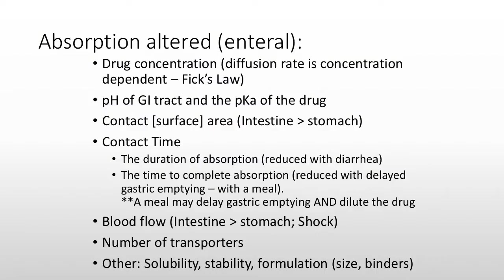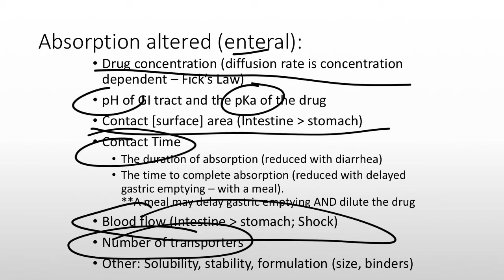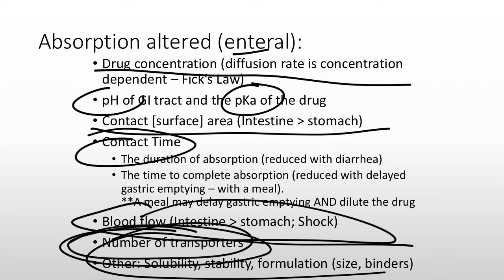What else can alter absorption? If something is taken orally and absorbed via diffusion, then the pH of the GI tract and the pKa of the drug matter, as does the contact surface area — whether you're absorbing primarily from the stomach, which has a low surface area, or the intestines, which has a larger surface area. The contact time matters too: how fast is your stomach moving? If your blood flow is altered, it can alter the absorption. The number of transporters can also have an effect on how fast something is absorbed. You just need to know that absorption can be altered, and when it's altered, you need to understand and plan ahead for that.